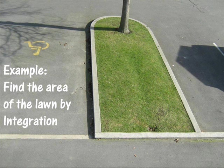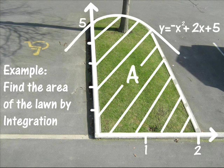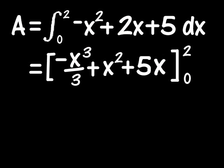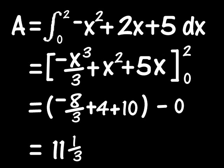To find the area of the lawn bounded by the x and y axes and the function negative x squared plus 2x plus 5, first anti-differentiate the function, then substitute in the upper and lower x values, which gives an area of 11 and 1 third square meters.